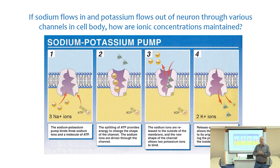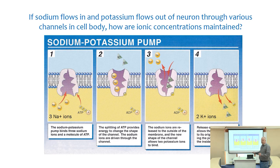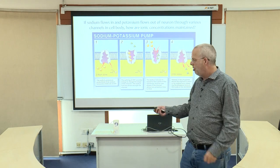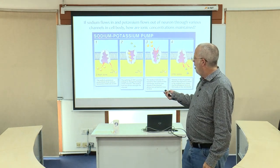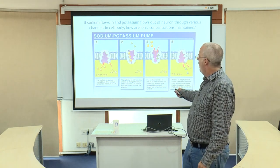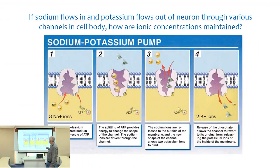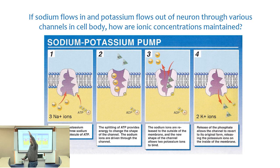Neurons use pumps — these deplete a lot of the cell's energy, but they're critical for maintaining these concentration gradients. We have a sodium-potassium pump: it takes three sodium ions and, through the use of ATP or energy, pushes the sodium out of the cell. It then latches onto potassium and moves two potassiums into the cell. This is how those concentration gradients are maintained.